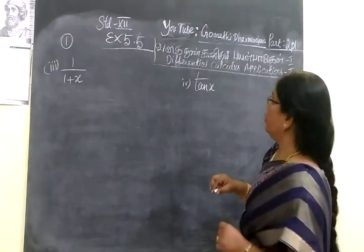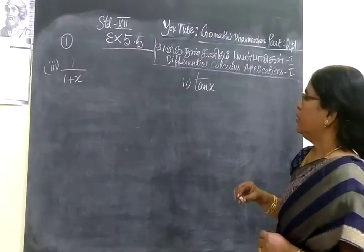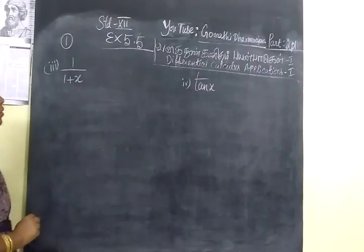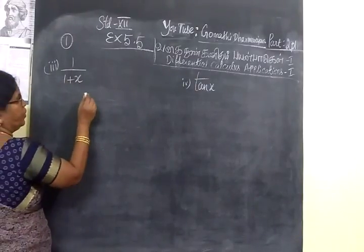So now we will see part 2.201. This is exercise 5.5 level question. It is going to be better in the review and repeat now.